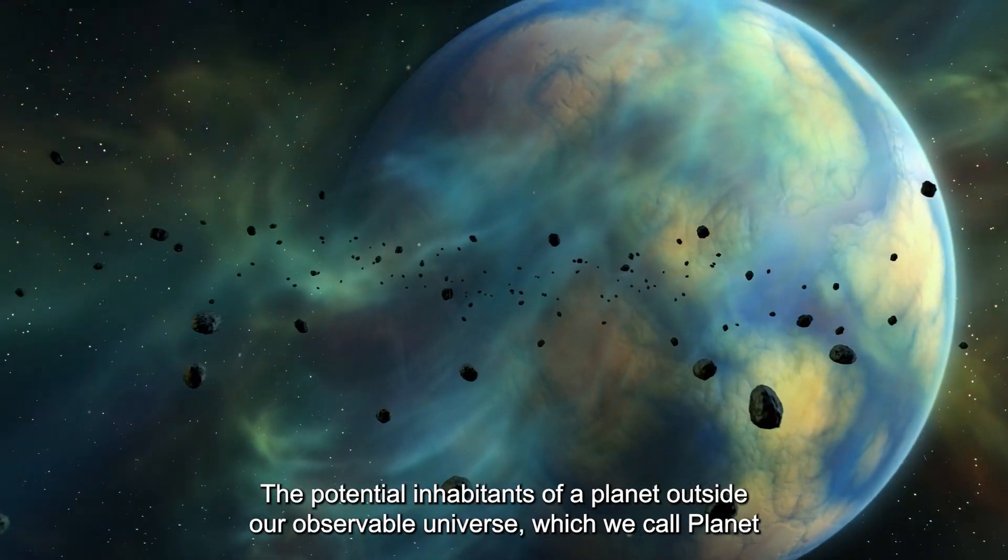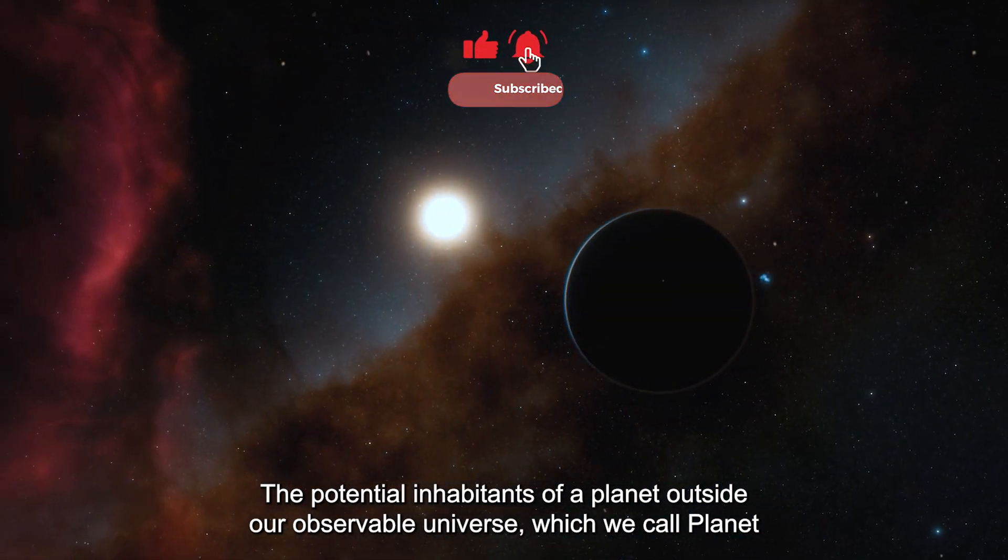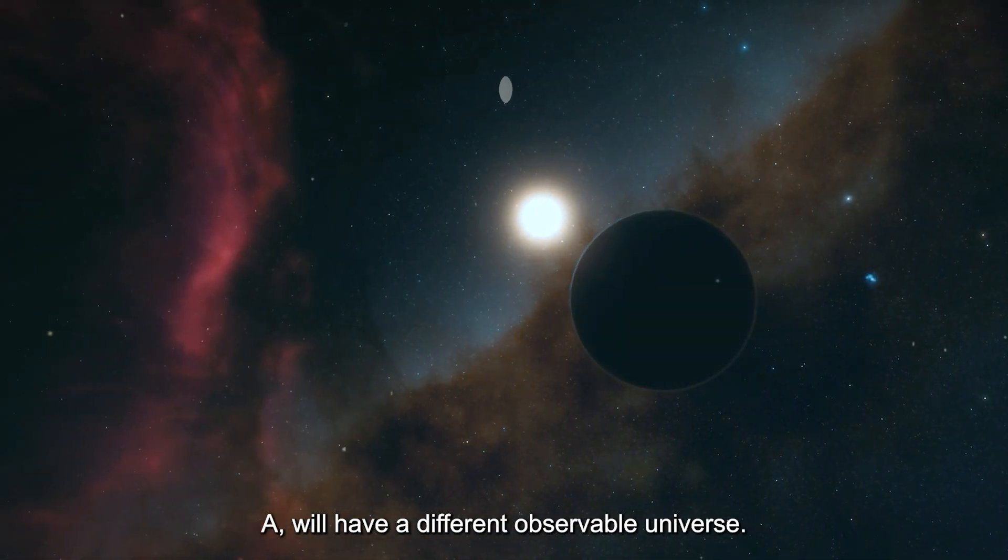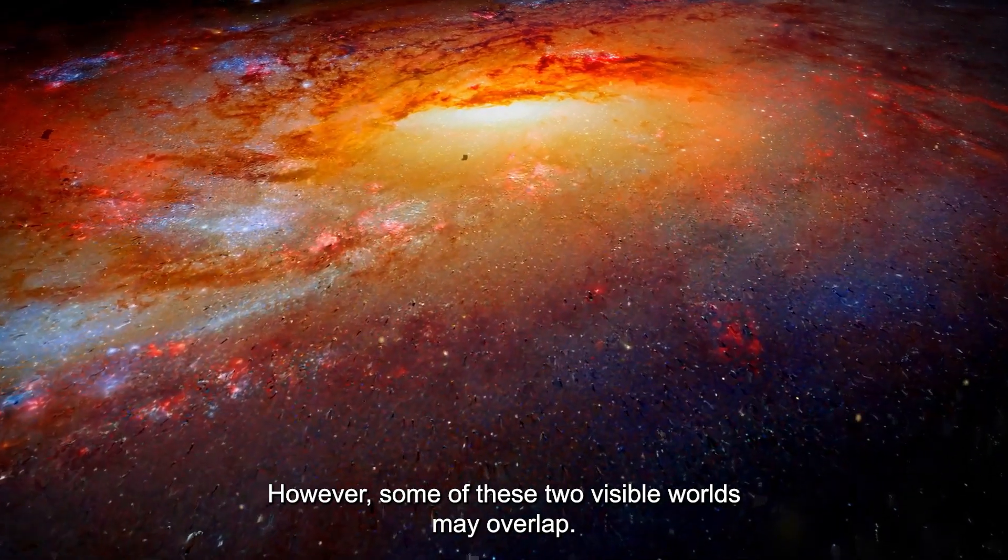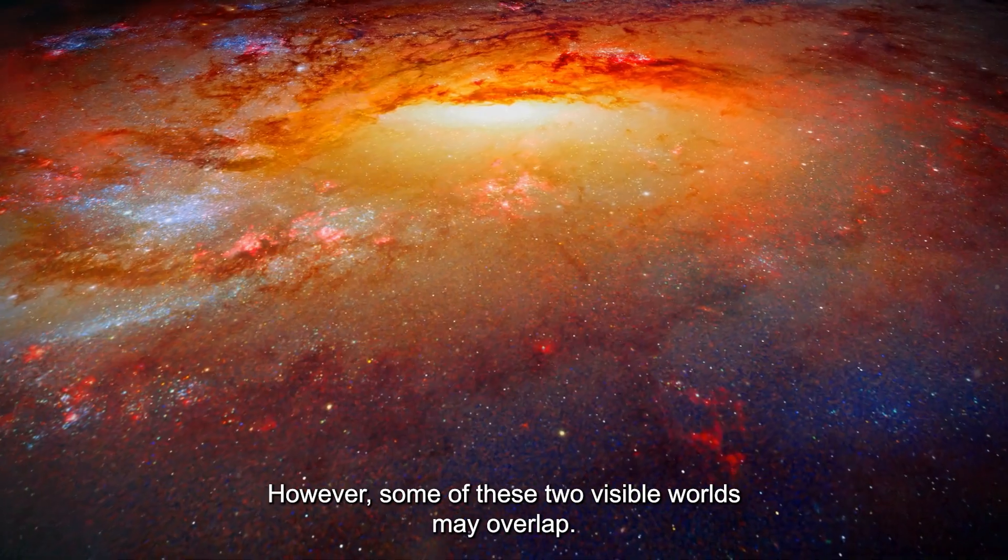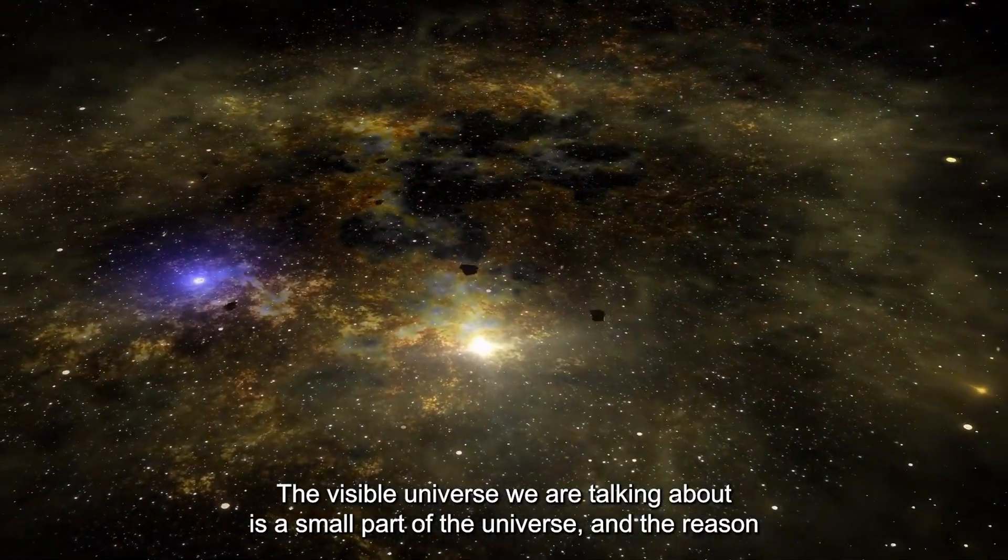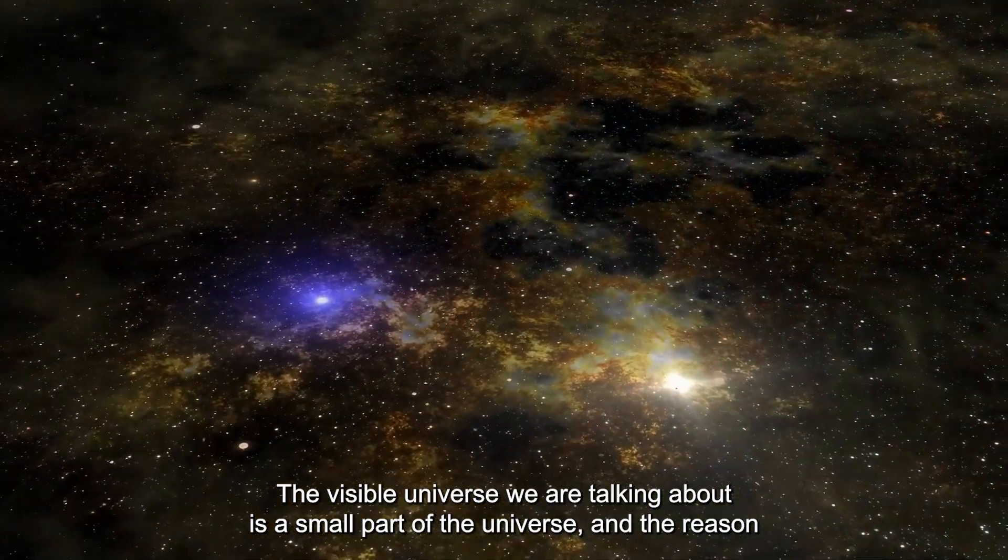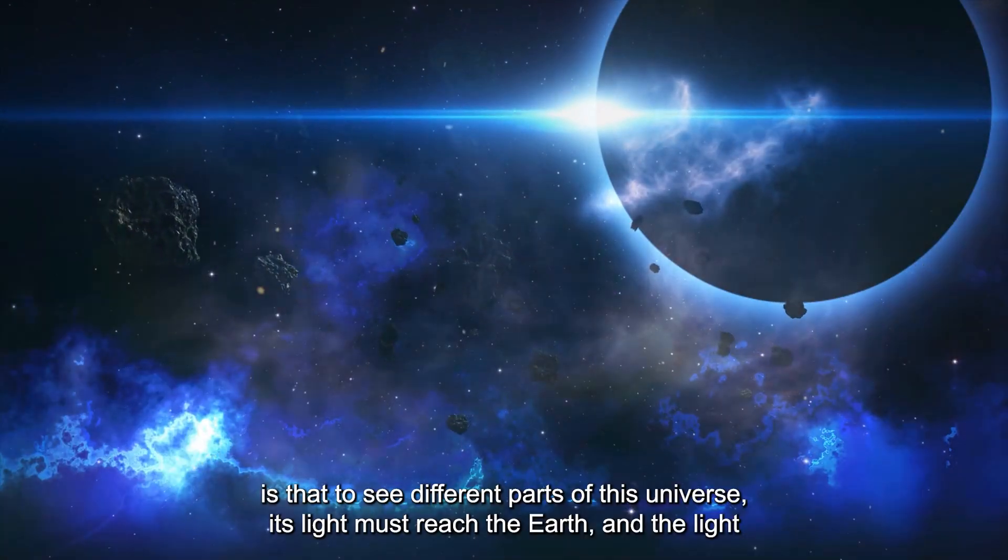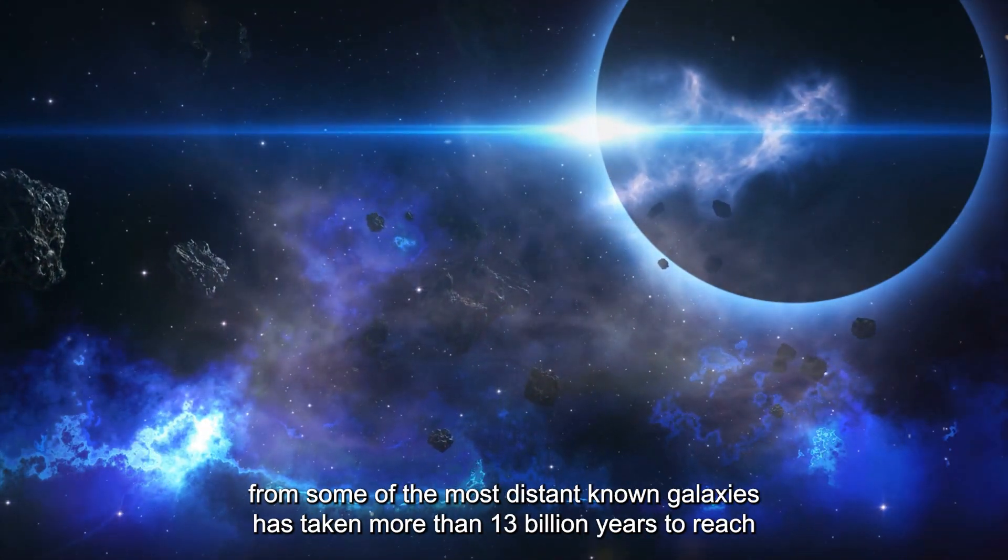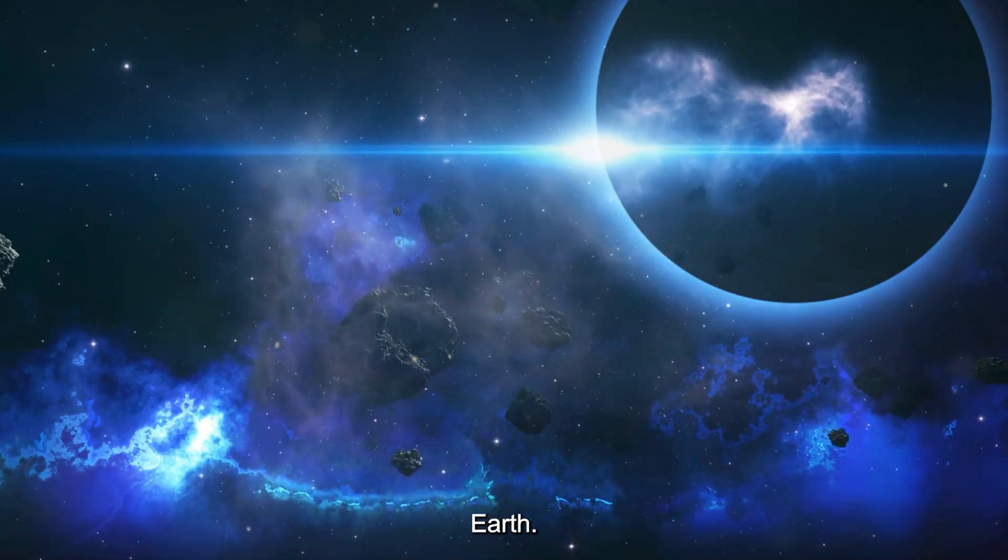The potential inhabitants of a planet outside our observable universe, which we call Planet A, will have a different observable universe. However, some of these two visible worlds may overlap. The visible universe we are talking about is a small part of the universe, and the reason is that to see different parts of this universe, its light must reach the Earth, and the light from some of the most distant known galaxies has taken more than 13 billion years to reach Earth.